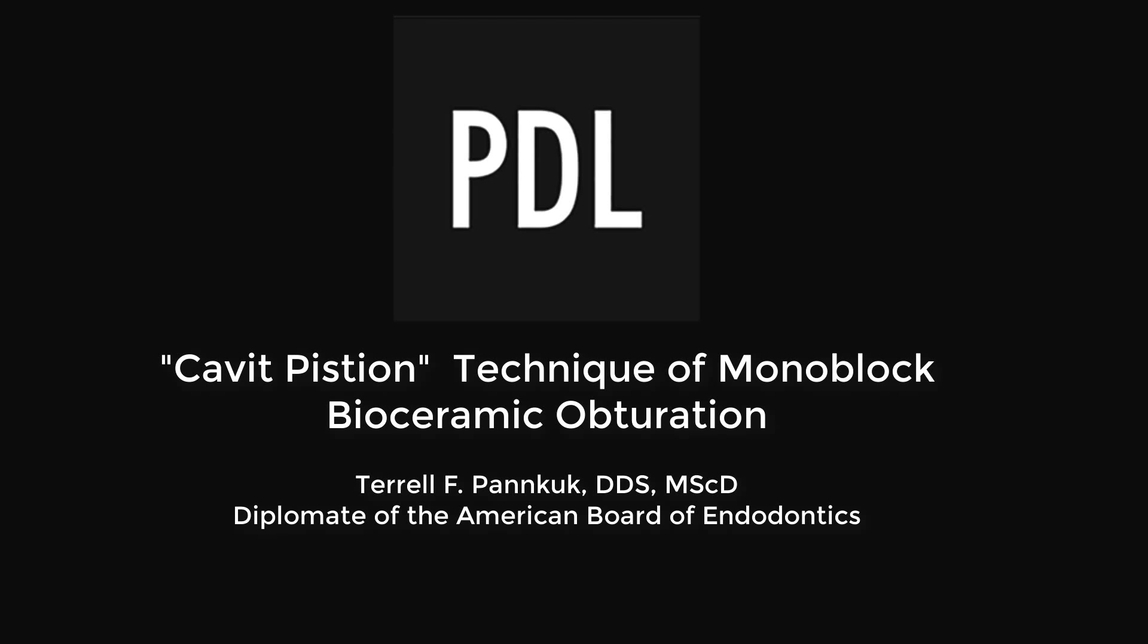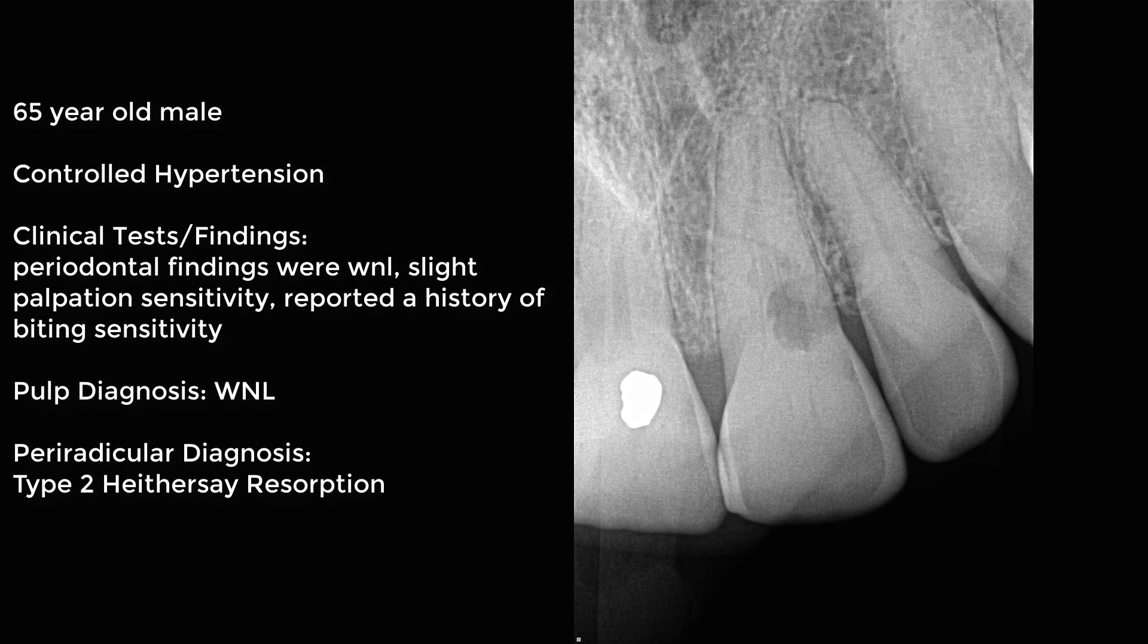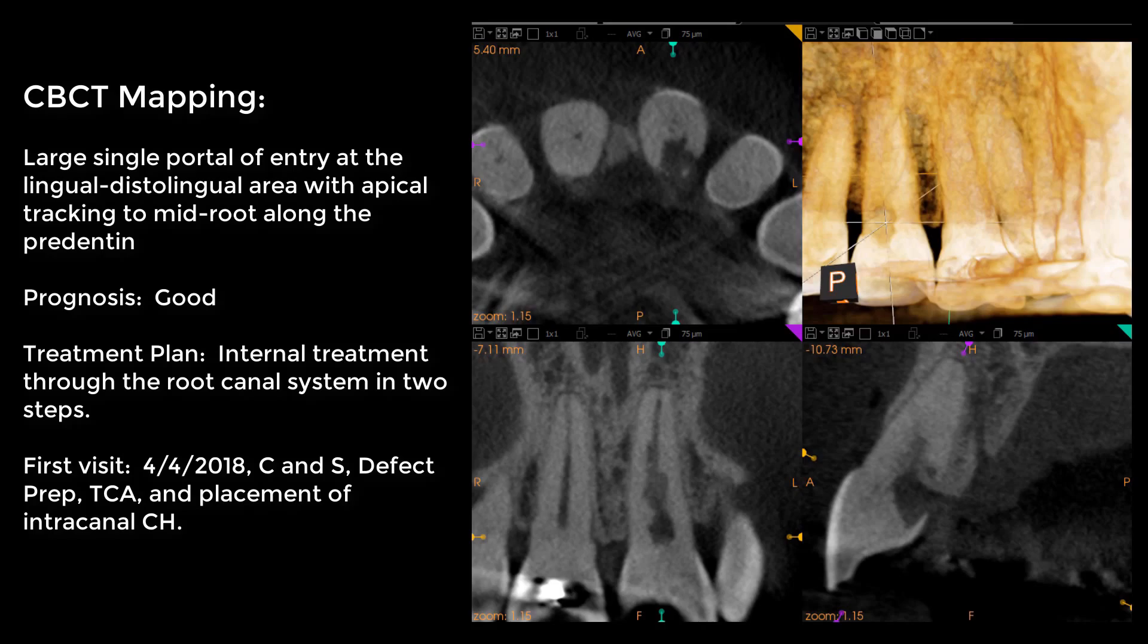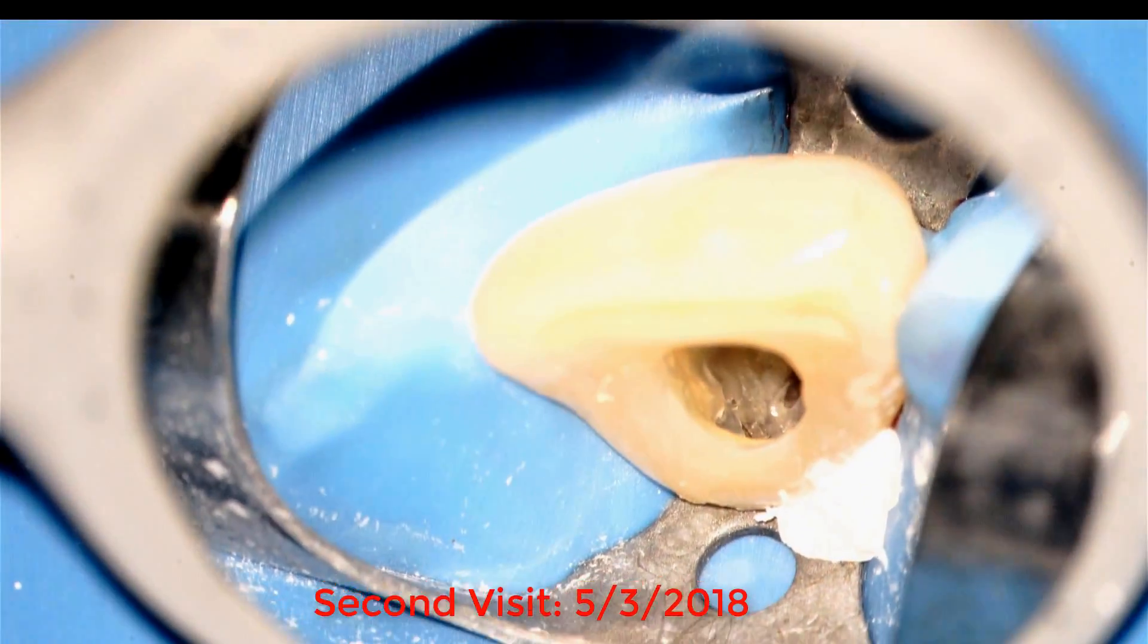In this instructional video, we're going to talk about the Cavett-Pisson technique of obturating with bioceramic. We're going to demonstrate on a 65-year-old patient, and we're going to go through the CT mapping of the Type 2 or possibly Type 3 defect, and the second visit process of finishing the obturation.